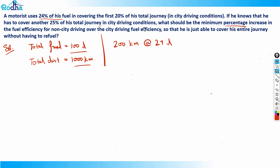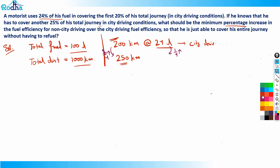In the next 25% of the journey, he also drives in city conditions — that's another 250 kilometers in city driving. If in 200 km he uses 24 liters, then for 250 km under the same driving conditions, the distance increases by one-fourth, so fuel also increases by one-fourth. One-fourth of 24 is 6 liters, so 250 km takes 30 liters.